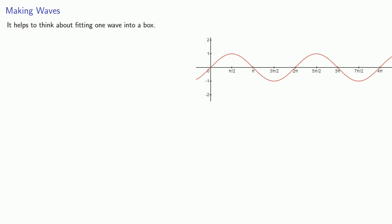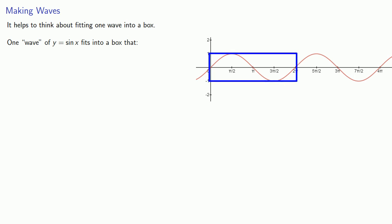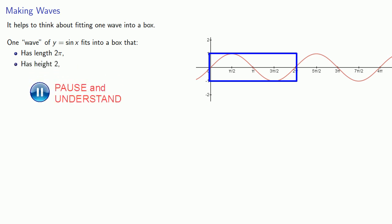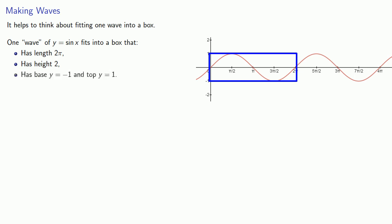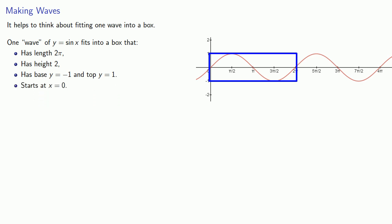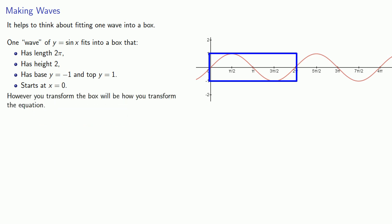To find the transformations needed to produce a particular trigonometric graph, it helps to think about fitting one wave into a box. One wave of y equals sine of x fits into a box that has length 2 pi, height 2, base y equals negative 1, top y equals 1, and the box starts at x equals 0. However you transform the box will be how you transform the equation.